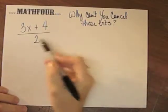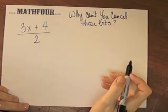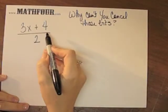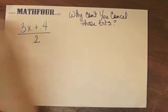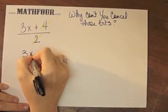Why can't you cancel those bits? So I know that we're tempted to do this and make this 3x plus 2.